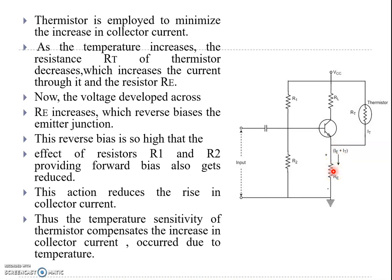This increases the voltage developed across RE, which reverse biases the emitter junction. This reverse bias reduces the effect of R1 and R2 providing the base bias, and this action reduces the rise in collector current.